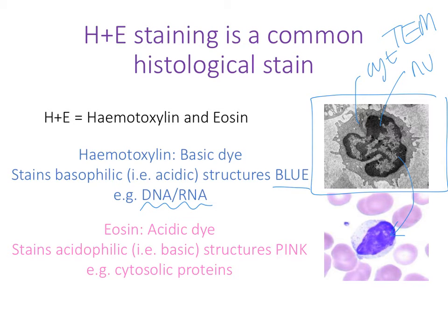Here you can see there's a lymphocyte, and the cells around it are red blood cells, which of course don't have a nucleus, so they're staining pink. The lymphocyte is staining really quite dark blue. This makes it very easy to spot immune cells when you're looking at various different tissue sections.